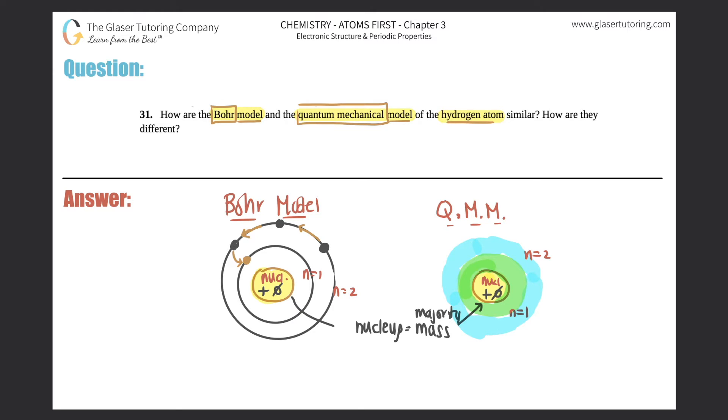Another difference is that the Bohr model is two-dimensional, 2D. The quantum mechanical model actually takes into the probability aspect of an electron actually being found here, specifically here in this position. So it's a 3D representation. So with the 2D representation, Bohr only had an n value.